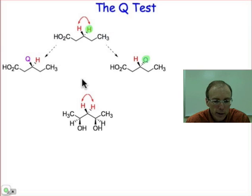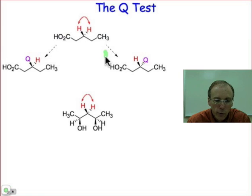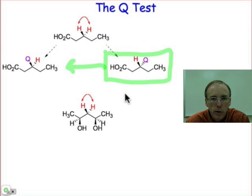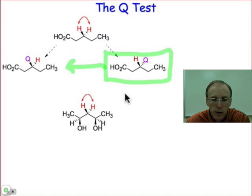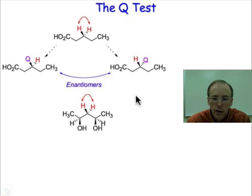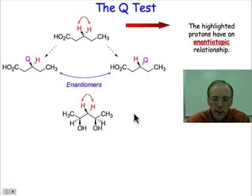We want to use our classification scheme to decide how these are related. If you try to superimpose the molecule on the right with the molecule on the left, the only way you can do it is to first take the mirror image of the structure on the right, and then you can superimpose every bond and every atom of these two molecules together. That is the criterion for enantiomers, so these two hydrogen atoms are related as enantiotopic.